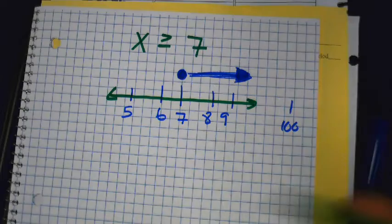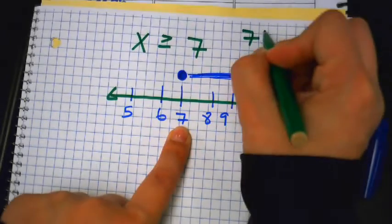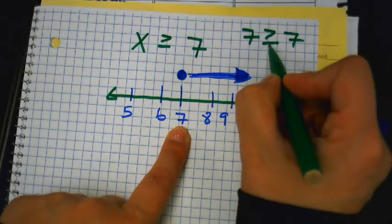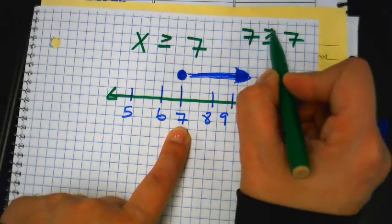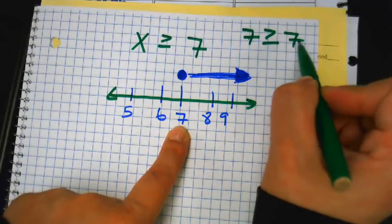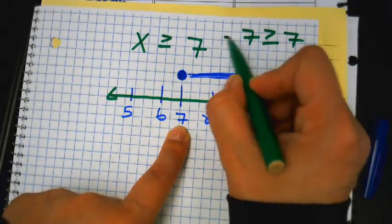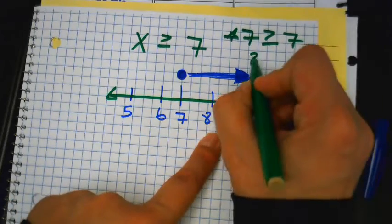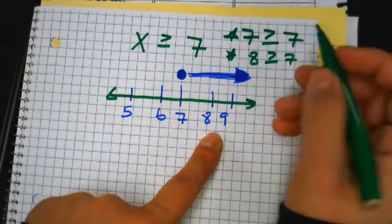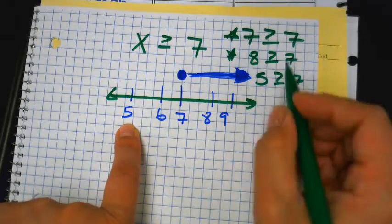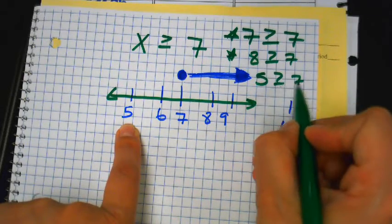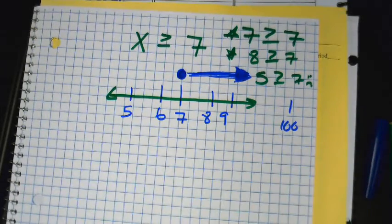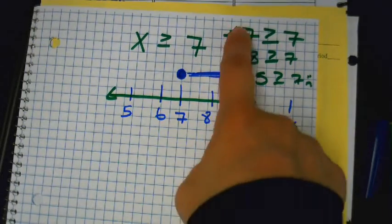Why is it a closed circle? Because is 7 greater than or equal to 7? Yes — it says equal to, so this works. That's why it's closed. Is 8 greater than 7? Yes. But if I shade 5, is 5 greater than or equal to 7? No — that's why we can't shade that way. You can only shade in one direction: shade the numbers that make it true.